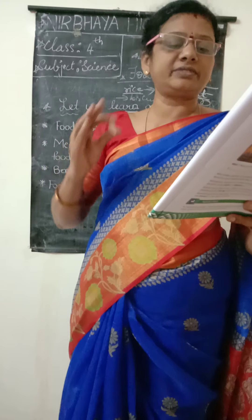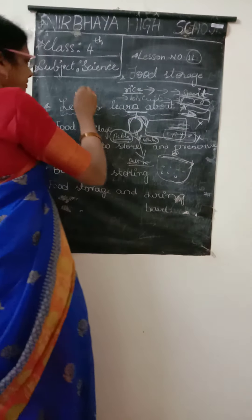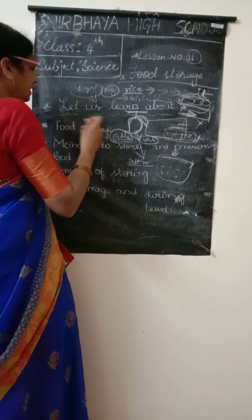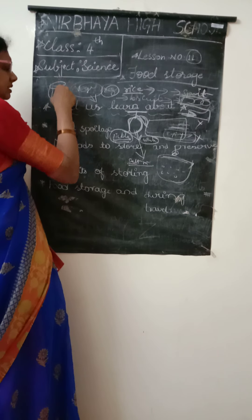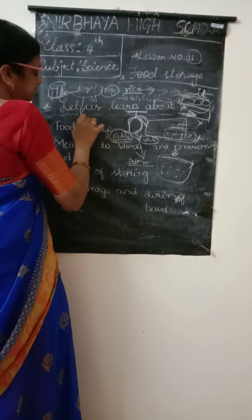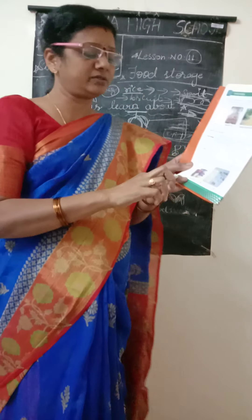Think and write where we store the following food items. Different types of food items are stored in different places — some in the refrigerator, some in a cool and dry place, some in dry food containers. For example, vegetables are stored in the refrigerator, while dal is stored in containers.